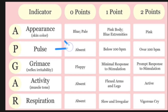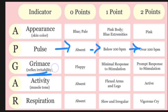For pulse: absent = 0, below 100 = 1, above 100 = 2. For grimace (reflex — reacting): baby not reacting, floppy = 0; reacting slowly = 1; very active = 2. On calculating all marks, 7 to 10 means the baby is in normal condition.